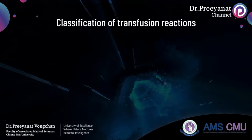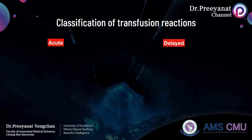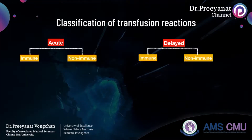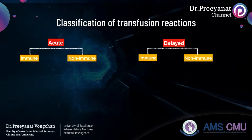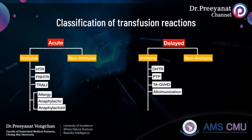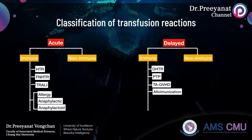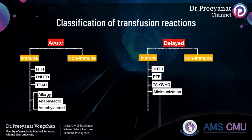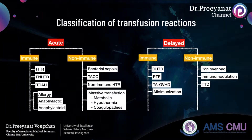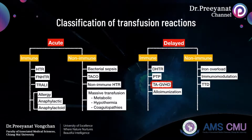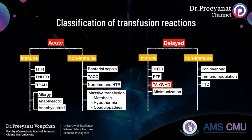Transfusion reactions can be classified into two main groups — acute and delayed — depending on the onset of the reaction. Both groups are also divided into immune and non-immune-mediated based on causes. Immune-mediated reactions mean that patients have existing antibodies specific to red blood cells, white blood cells, platelets, or plasma, while non-immune-mediated reactions are caused by other factors. Transfusion-associated graft-versus-host disease is classified as an immune-mediated delayed transfusion reaction.